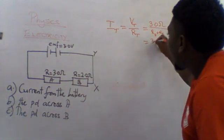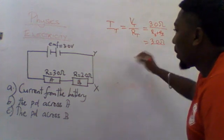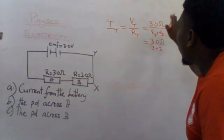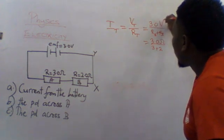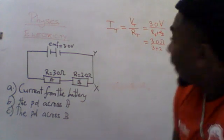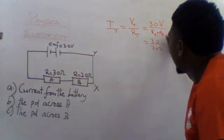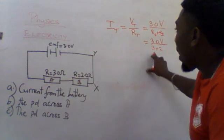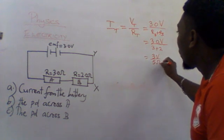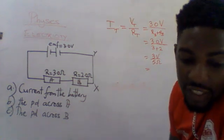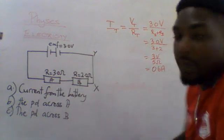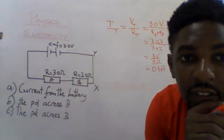That gives us 3 plus 2 ohms. So that is equal to 3 volts divided by 5 ohms, and the total current delivered will be 0.6 amps.